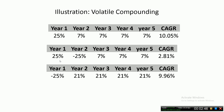In the first year, say you get minus 25%. If you want to achieve a CAGR of 10% at the end of five years, you must get every year a return of 21%, which is practically impossible.